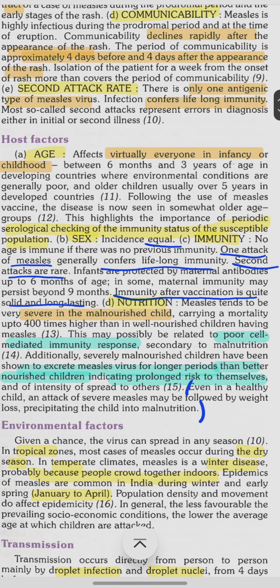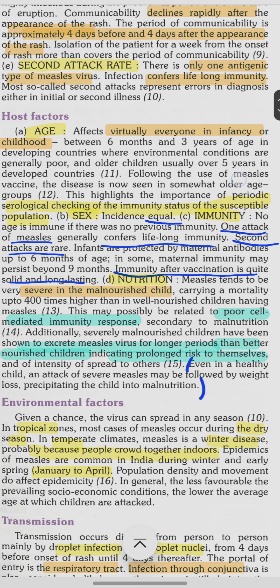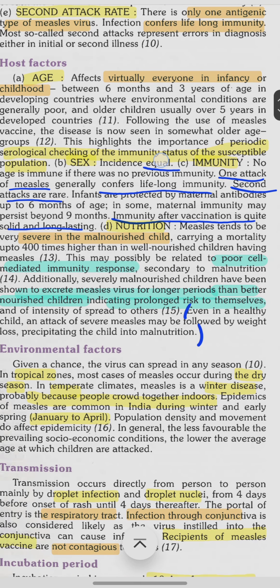We must check the immunity status of susceptible populations through serological testing. Due to vaccine administration, measles is now seen in older age groups, but otherwise it occurs in children aged six months to three years in developing countries. Sex incidence is equal with no gender predilection.